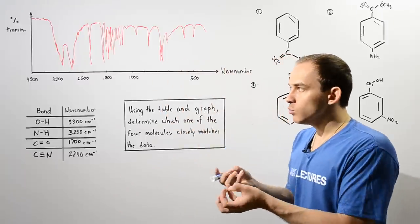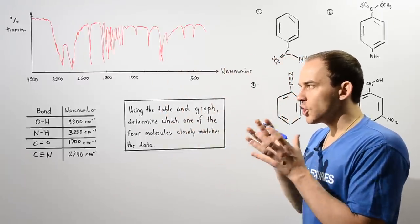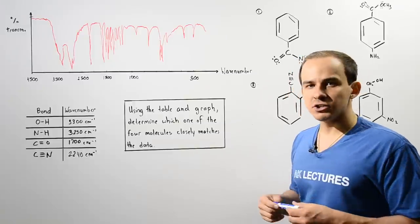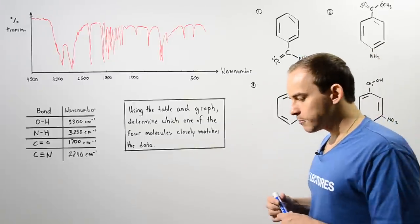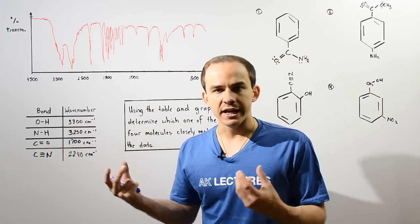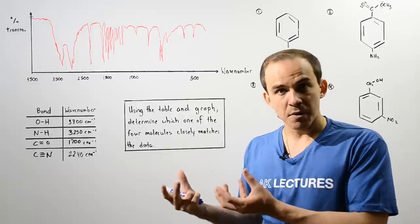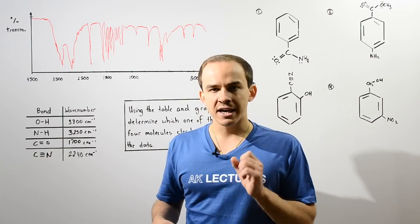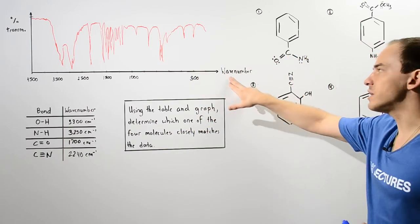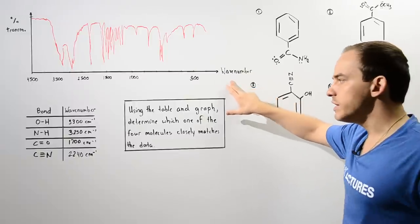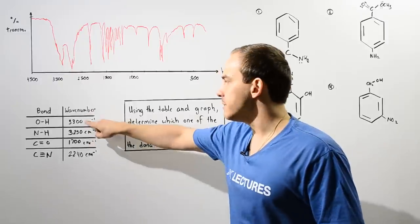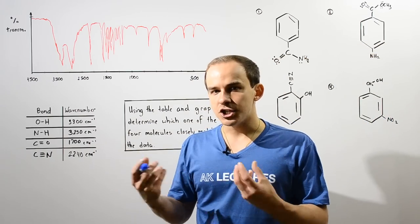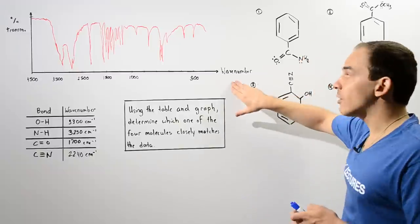We can use infrared spectroscopy to determine the different types of functional groups and the different types of bonds that our molecule contains. Every chemical bond oscillates with a specific frequency that corresponds to a certain amount of energy. The frequency of oscillation of any chemical bond is related to a quantity known as the wave number, given in units of reciprocal centimeters. The greater the frequency of oscillation, the greater our wave number.